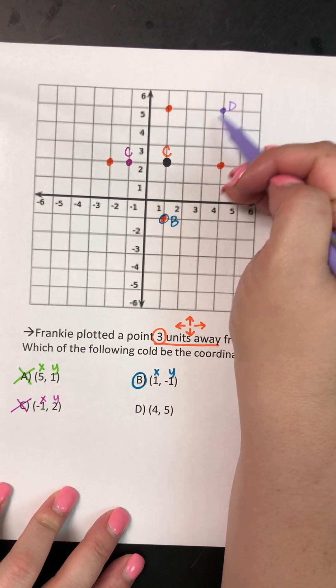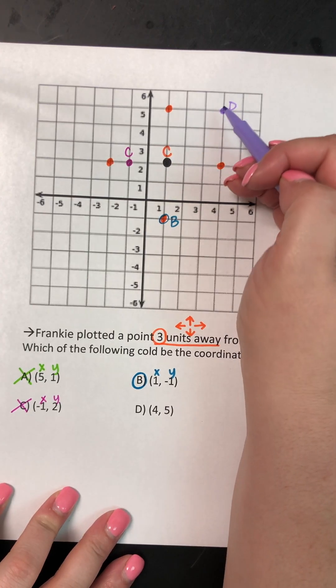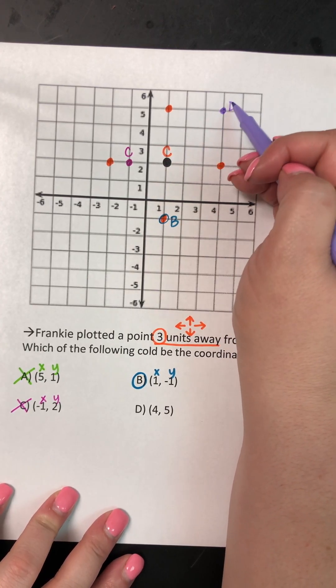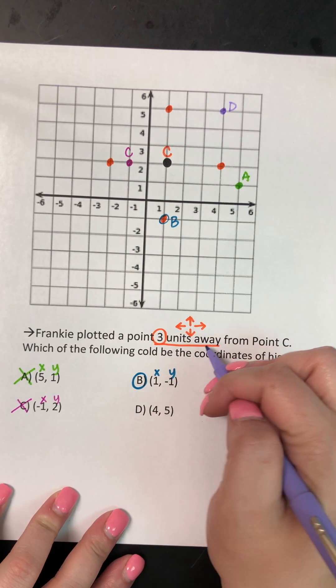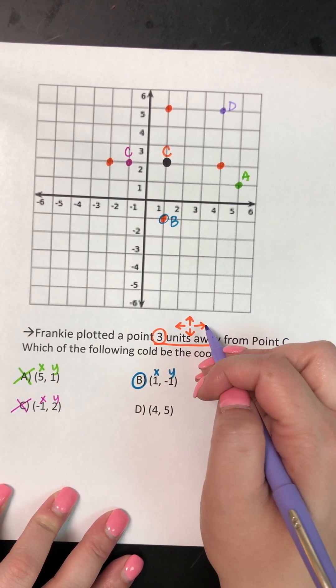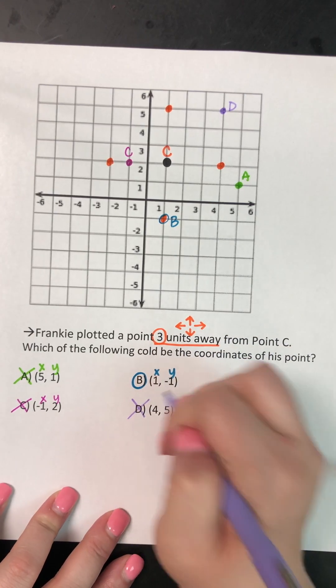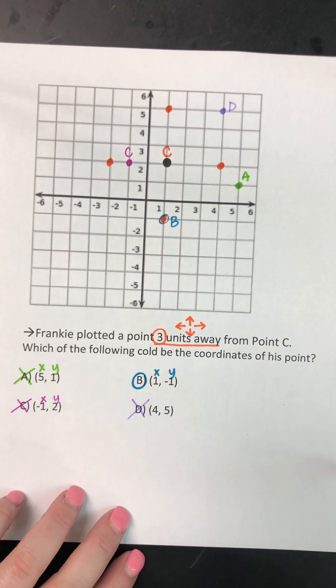So again, we cannot move diagonally. So even though this looks like it is three blocks away, it can't be because it has to be straight up, straight down, straight left, or straight right. Okay. So the best answer for this question will be point B.